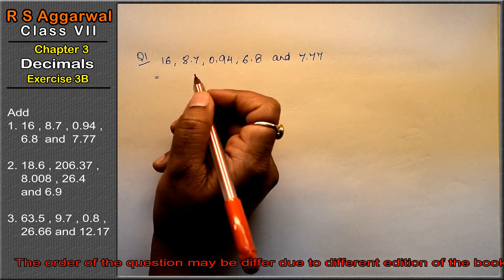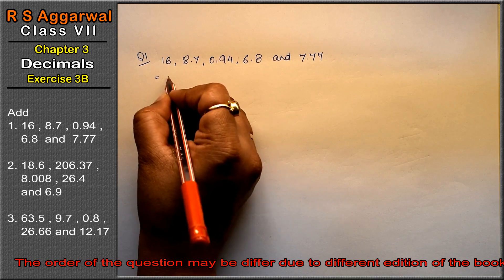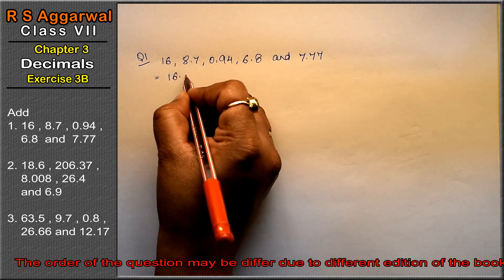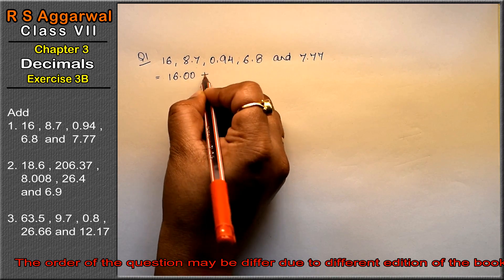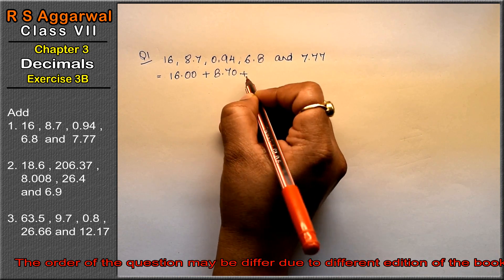Friends, we will do this in like fraction. See, after the point, there is maximum two digits. So, we will put a point in which we are not going to convert in two digits.